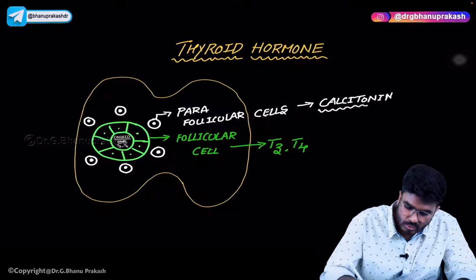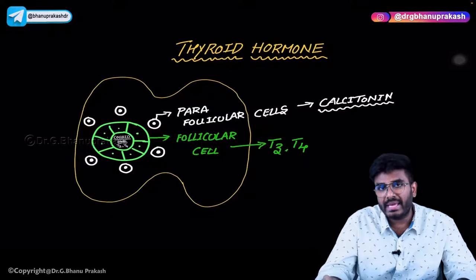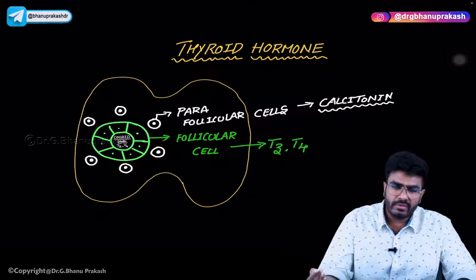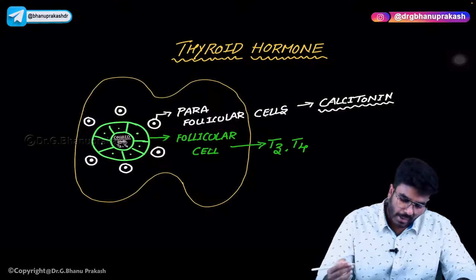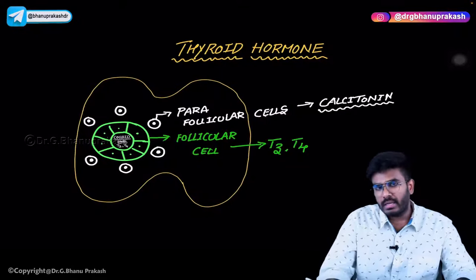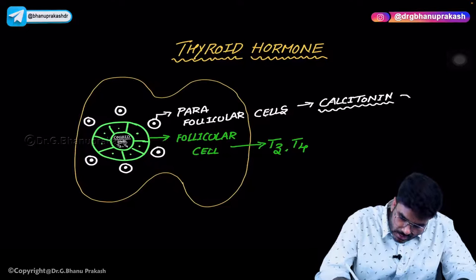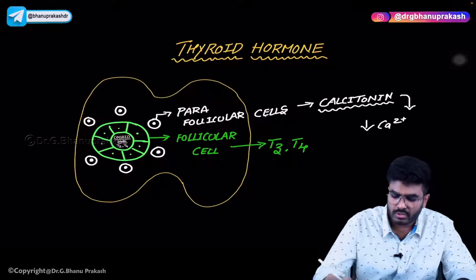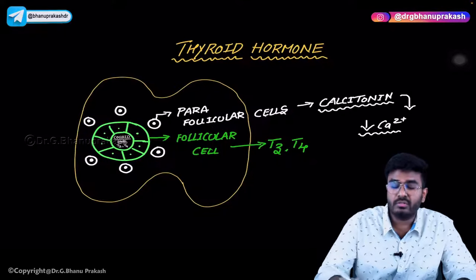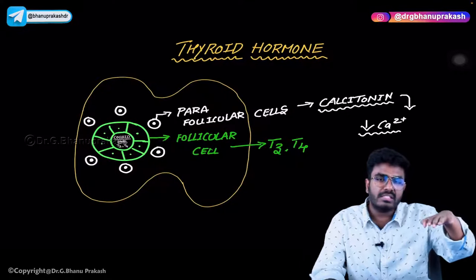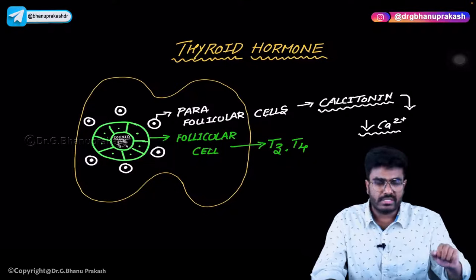Calcitonin — don't confuse it with calcitriol. Calcitriol is the active form of vitamin D3, which helps in increasing blood calcium levels and helps in bone formation. Parafollicular cells produce calcitonin, and the function of calcitonin is to decrease blood calcium levels. Whenever there are high levels of calcium in the blood, calcitonin is produced and brings the calcium level back to normal.